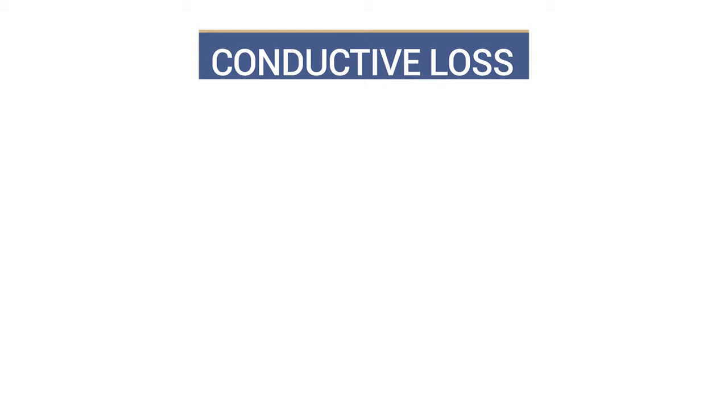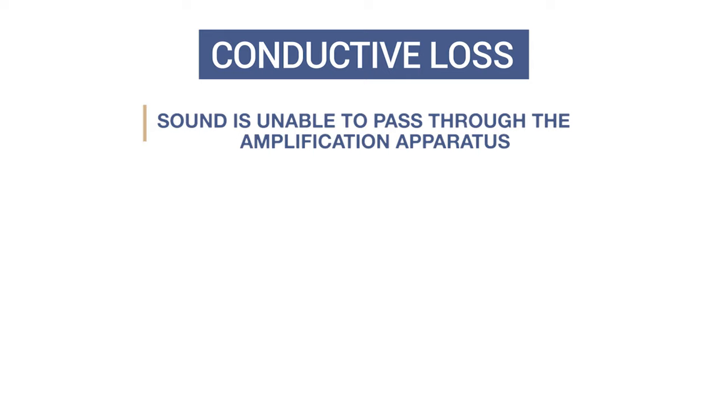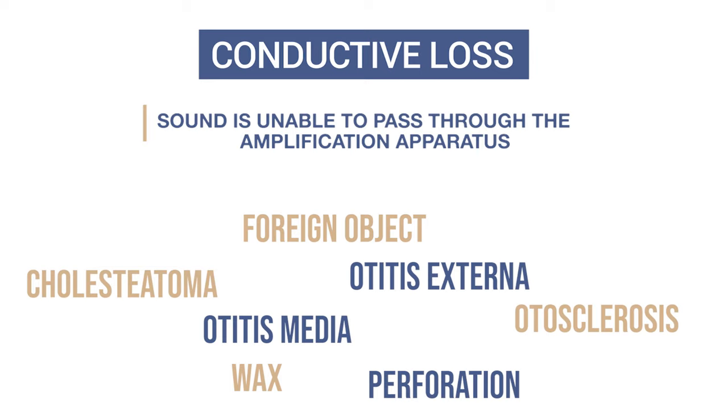Conductive hearing loss is the name given when the sound is unable to properly reach the cochlear nerve. Regardless of whether the pathology is in the outer ear, tympanic membrane or the middle ear, the sound is unable to travel through the middle ear and is therefore not amplified as would be normal. There are many different reasons for this such as otitis media, perforation, wax, otitis externa, otosclerosis, foreign objects and cholesteatoma.